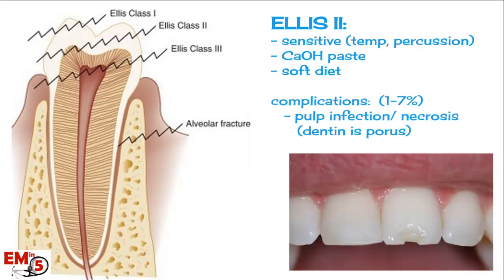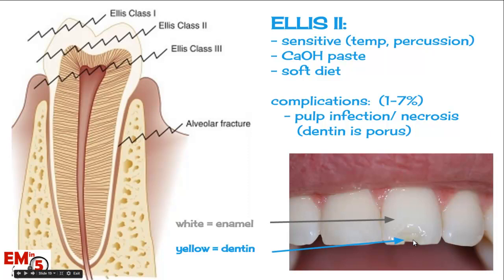An LS2 fracture goes through both the enamel and the dentin. Here you see the white enamel on the outside — the hard layer — and just under that, peeking through, you see this yellow. That's the dentin layer, so you know this is an LS2. This tends to be more sensitive to temperature, percussion, and possibly cold air. It carries a complication rate a little higher — 1% to 7% — because the dentin is porous, letting bacteria get into the pulp where it can cause problems.